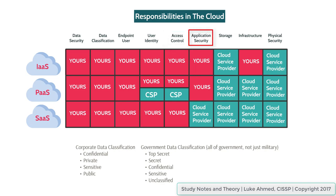Application security is an easy one. Which of these three cloud service models deals specifically with providing an application? That's software as a service — they provide you a software or application and rent it to you. So application security is obviously going to be on the side of the cloud service provider. You, the tenant, are just renting the application; you don't care about the security infrastructure upon which the software is hosted. In IaaS and PaaS, application security is within your scope of responsibilities. Software as a service is the only model handled by the cloud service provider.